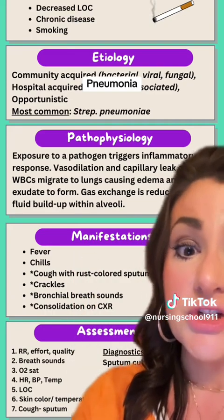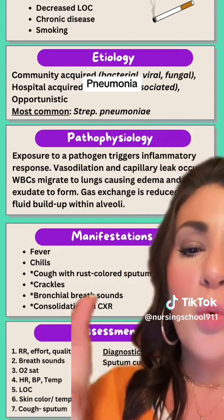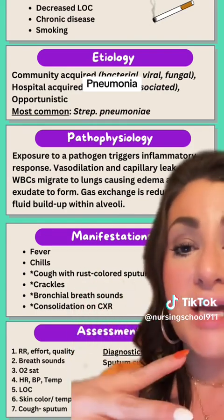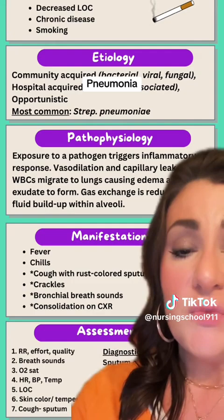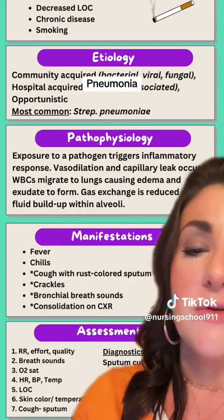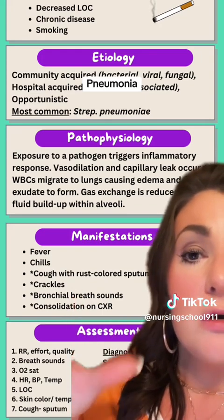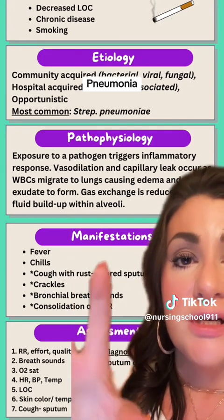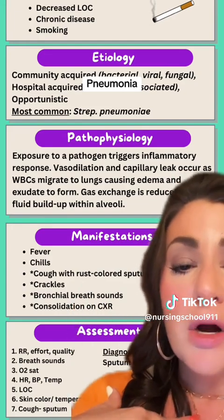So what are our manifestations? Fever and chills are going to go along with any infectious process, but we're going to think about what is unique. A cough with rust-colored sputum is kind of unique to streptococcal or pneumococcal pneumonia. It happens because of the damage to the capillaries — some of those red blood cells are leaking out as well, and so that sputum that the patient coughs up may have a rust color to it. Crackles may be heard initially low in the airways when the infection is kind of new, then it's going to progress to what we call bronchial breath sounds.